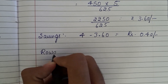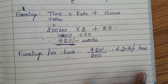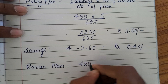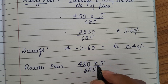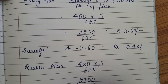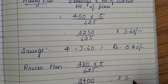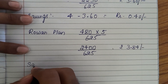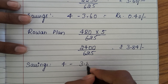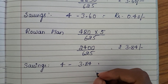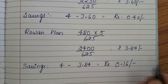Under Rowan plan: (480 × 5) ÷ 625 = 2400 ÷ 625 = ₹3.84. So savings under Rowan = 4.00 − 3.84 = ₹0.16 per piece. Halsey plan helps save more money per piece than Rowan plan.